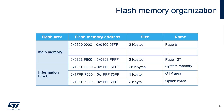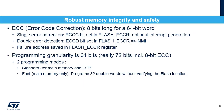This slide shows the flash memory map. There are 128 pages for the main memory, starting from page 0. The page number is used in the software procedure to erase a page.